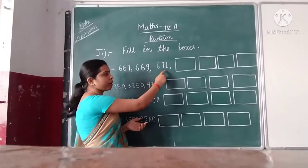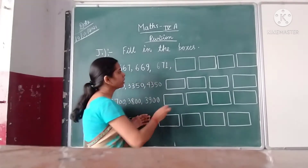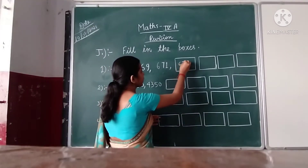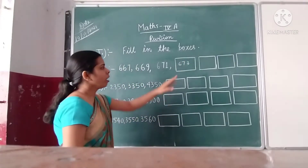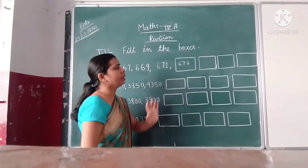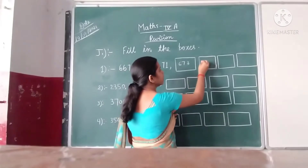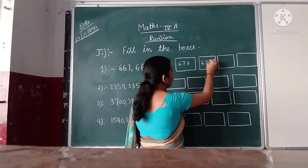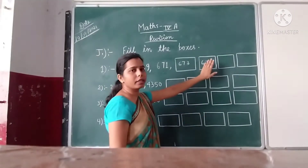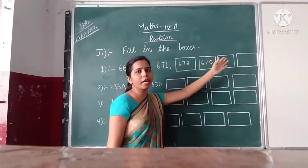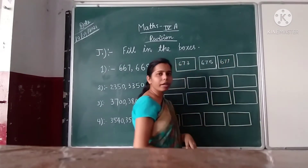When we add 2 in 671, we get our next number 673. When we add 2 in 673, we get our next number 675. When we add 2 in 675, we get our next number 677.